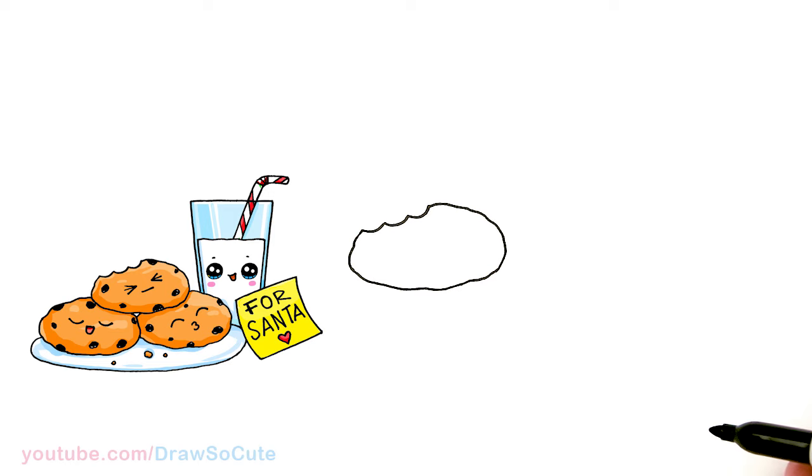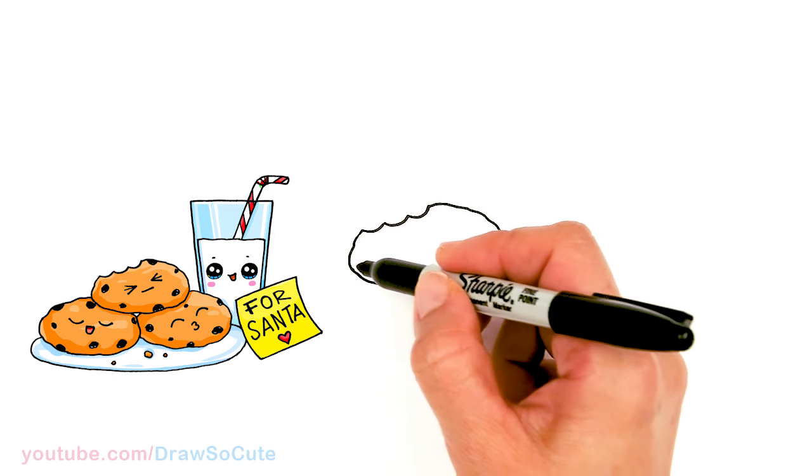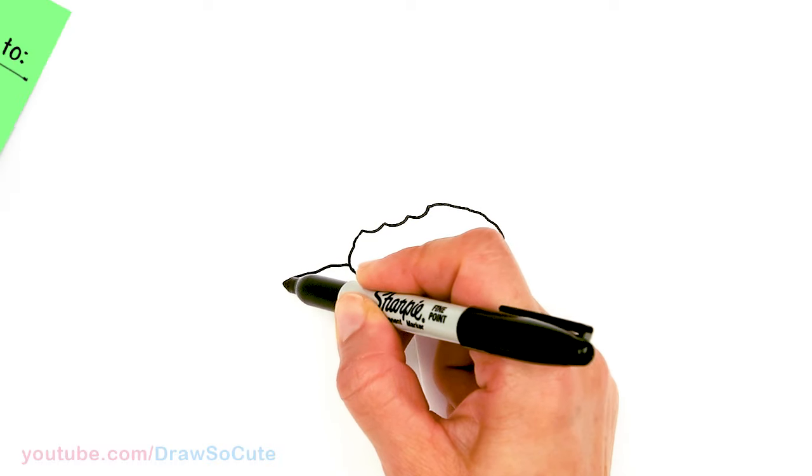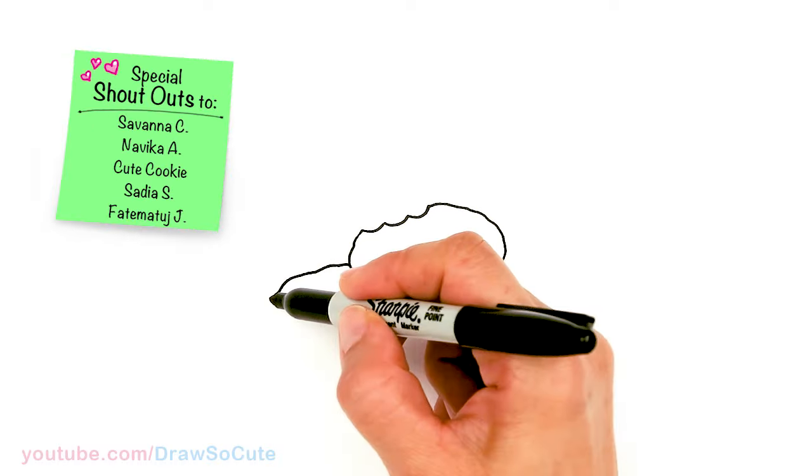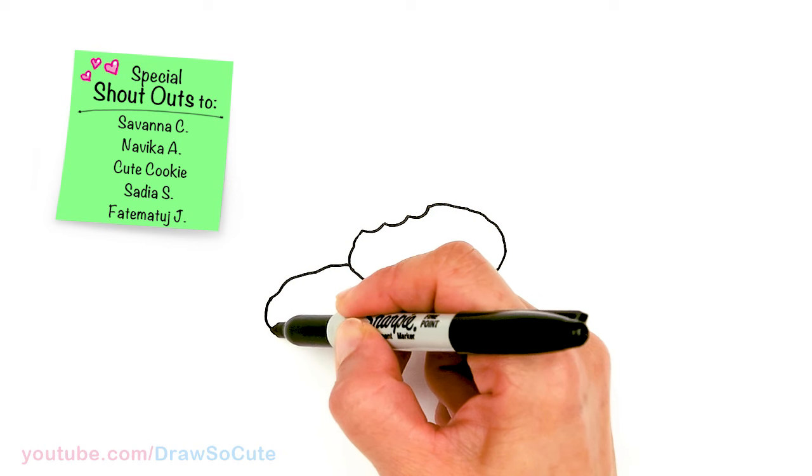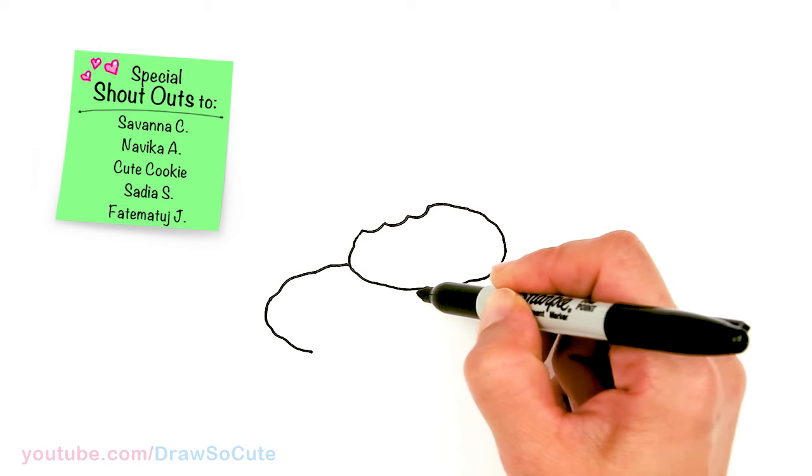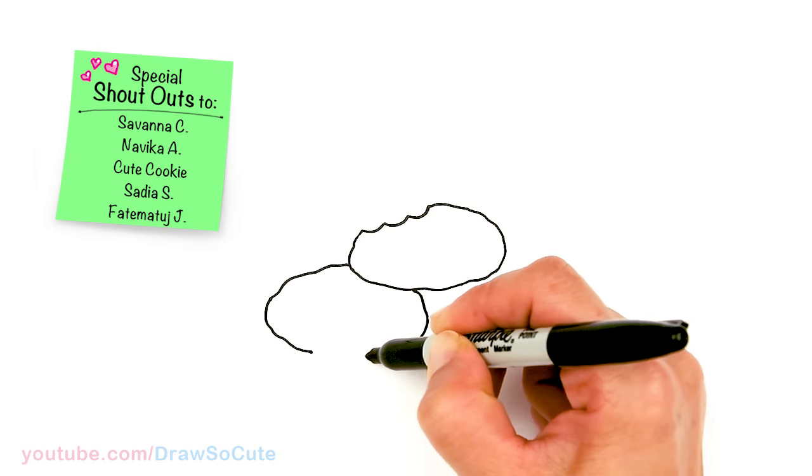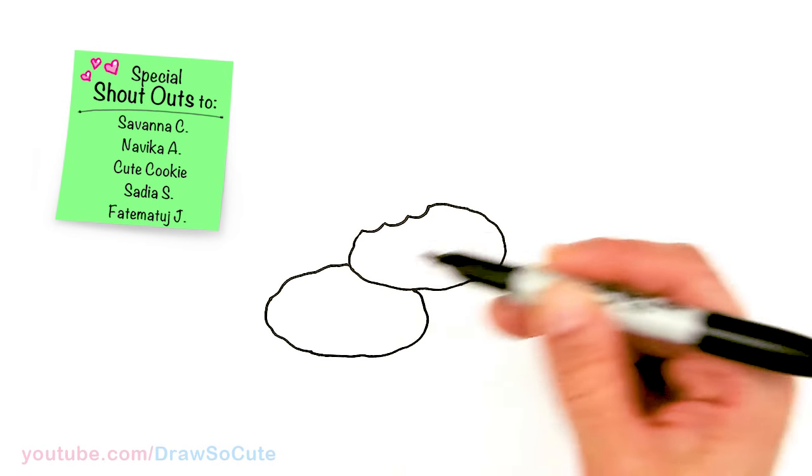Okay so we have our first cookie in here. Now let's draw one at the bottom. So I'm gonna come about right here, basically draw the same thing, just a wobbly oval. You just want to aim to have an oval-ish shape and connect it.